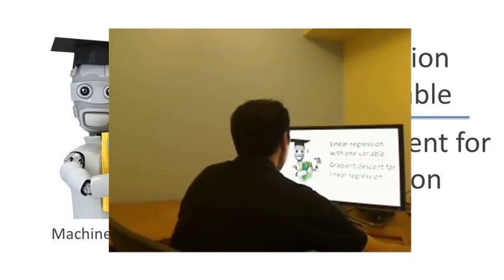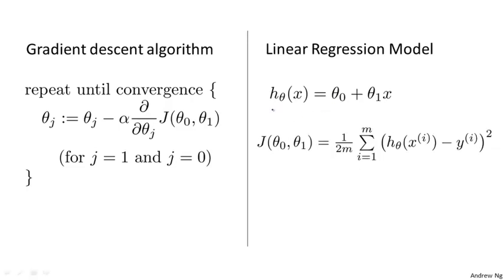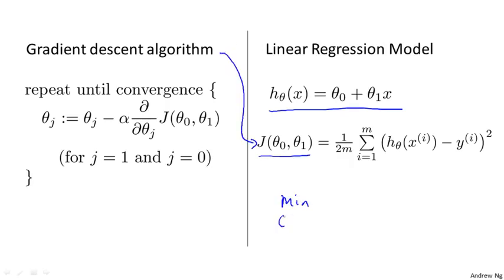So this is what we worked out in the previous videos. There's our gradient descent algorithm, which should be familiar. And here's the linear regression model with our linear hypothesis and our squared error cost function. What we're going to do is apply gradient descent to minimize our squared error cost function.